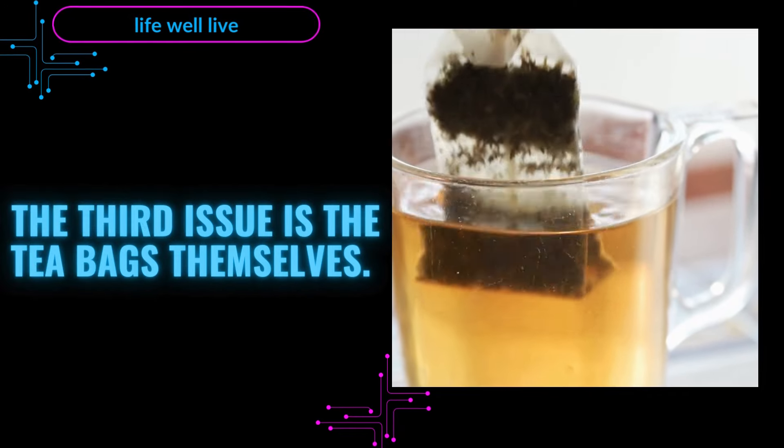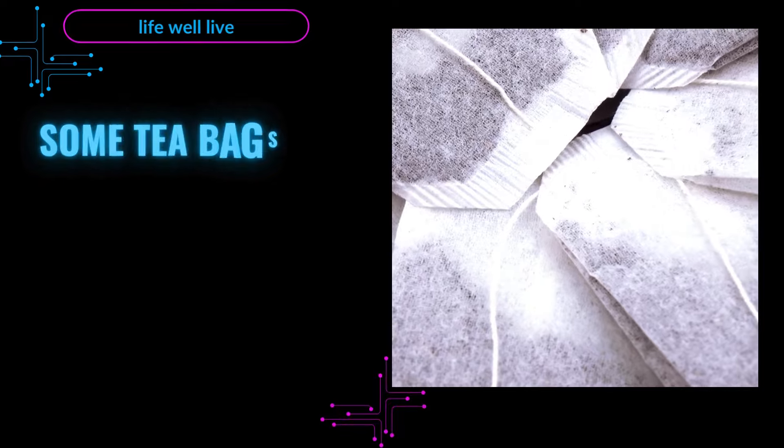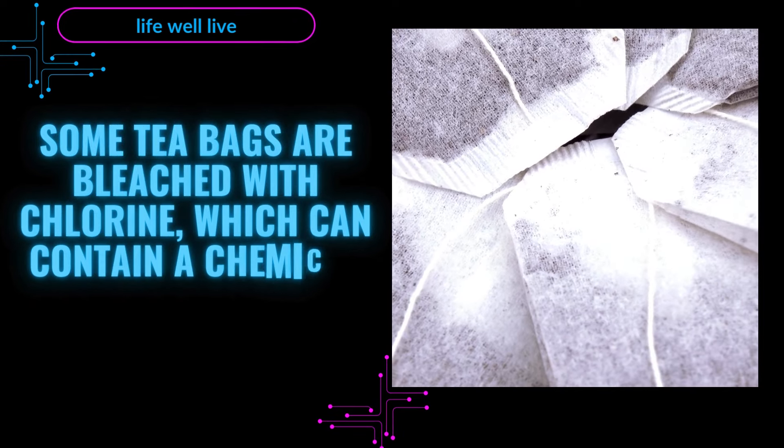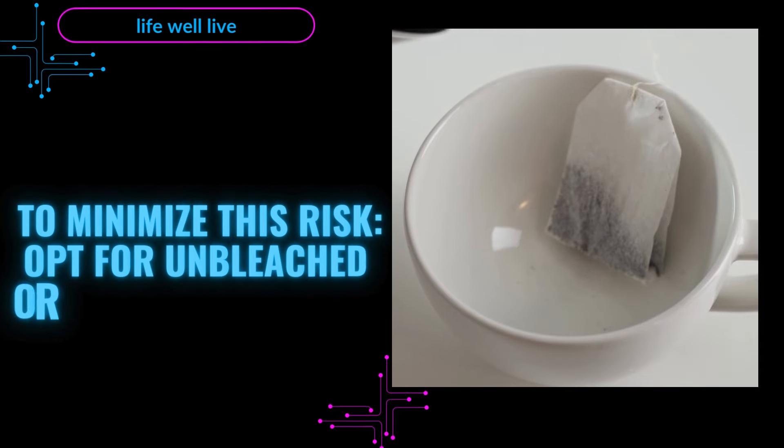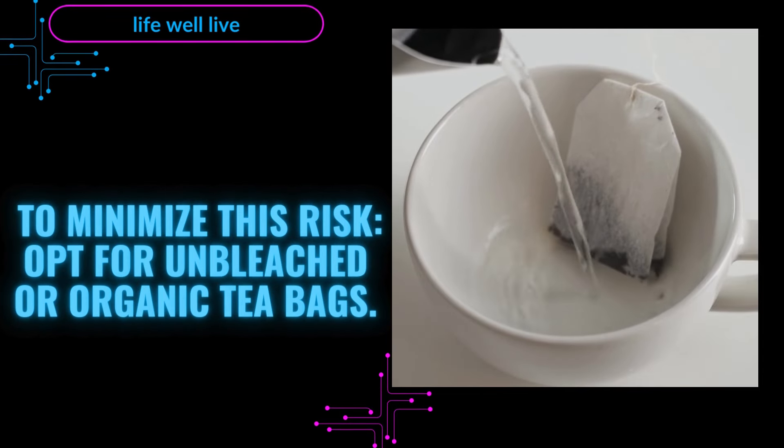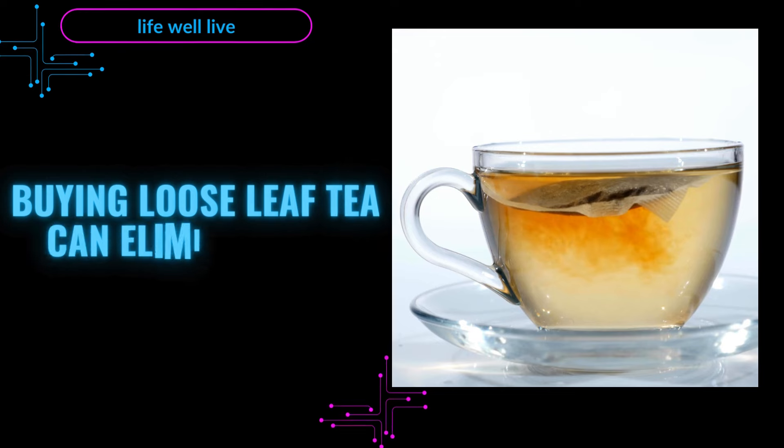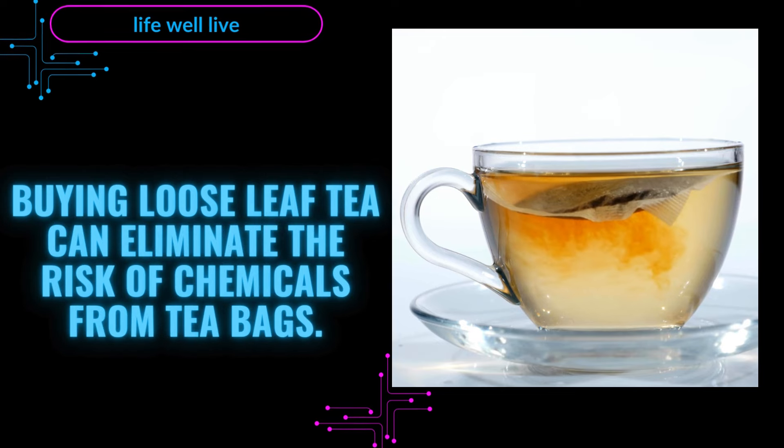The third issue is the tea bags themselves. Some tea bags are bleached with chlorine, which can contain a chemical called epichlorohydrin, a known carcinogen. To minimize this risk, opt for unbleached or organic tea bags. Buying loose leaf tea can eliminate the risk of chemicals from tea bags.